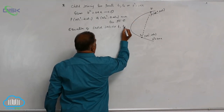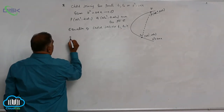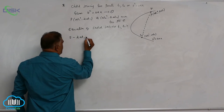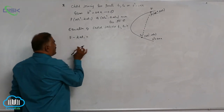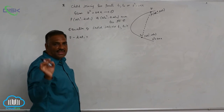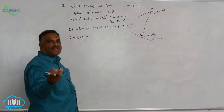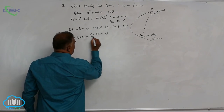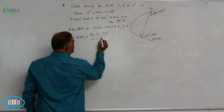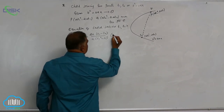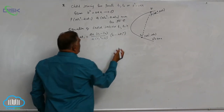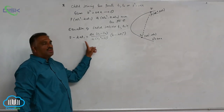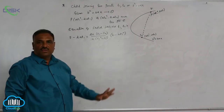The equation of the chord joining t1 and t2 is: y − 2at1 = [(2at1 − 2at2) / (at1² − at2²)] × (x − at1²). We wrote this equation with the help of y − y1 = m(x − x1). Now let us simplify — 'a' gets cancelled here.